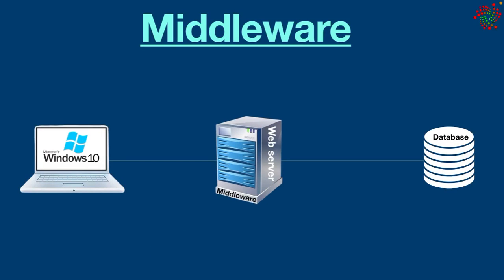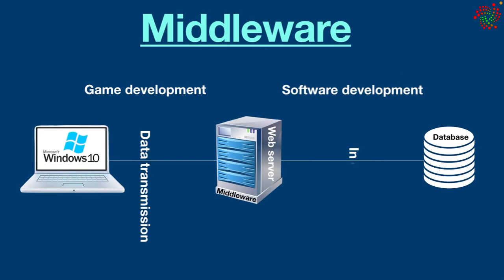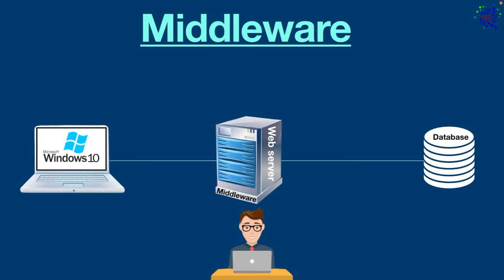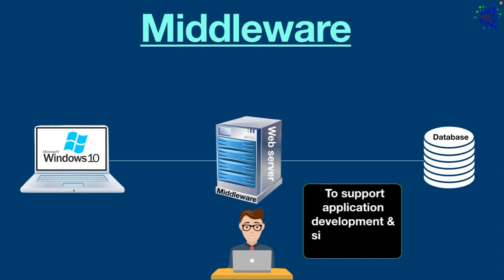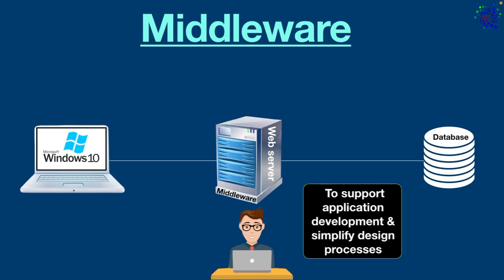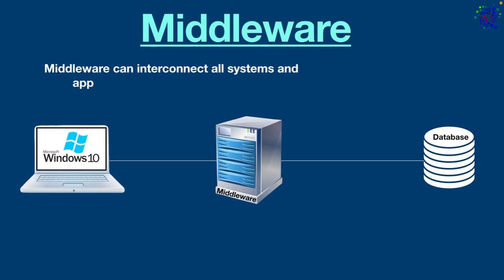Middleware can be used in a variety of ways — for example, game development, software development, data transmission in electronics, and so on. It is commonly used by developers to build applications more efficiently and intelligently. At the most basic level, middleware enables developers to build applications without having to create a custom integration every time they need to connect application components, data sources, computing resources, or devices.